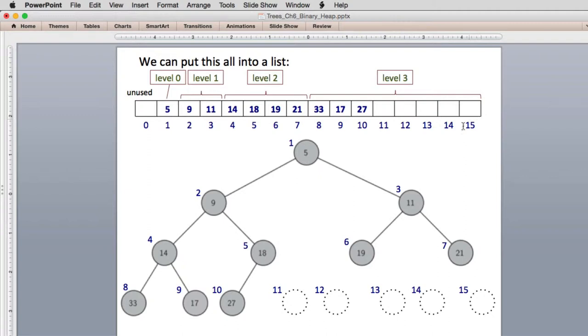I've labeled in blue here the index numbers of where these values are stored. Inside the node, this is the value, the key stored in the node. The blue numbers here are the index in this list. If you go down the root here from 1 to the left child, it doubles - it goes from 1 to 2. If you look at the left child of 2, it doubles to 4. If you look at the left child of 4, it goes to 8.